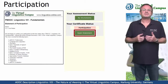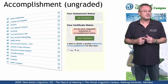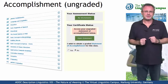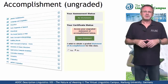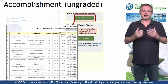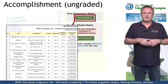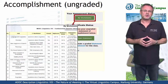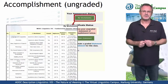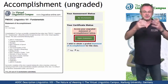The second option is the statement of accomplishment, also for free and issued by the Virtual Linguistics Campus. To be given such a certificate, we not only want your regular participation, but we also want you to do the mastery worksheets — our electronic tests, one for each unit — and we want you to achieve an overall score of at least 60%. A simple click on the open statement button and the certificate is yours.